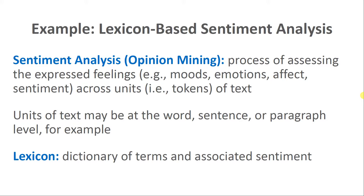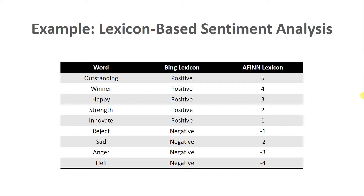When I say lexicon-based sentiment analysis, it means we're using a lexicon or dictionary of terms that have an associated sentiment with them. So for example, let's say we have the following words appearing in a discussion post: outstanding, winner, happy, strength, innovate, reject, sad, anger, and hell. We've decided to focus on the word as our unit of interest. There are different types of dictionaries or lexicons we can use. The BING and AFINN lexicons are two very common ones. The BING lexicon does a dichotomous code of certain words — whether it's positive or negative. Whereas AFINN ranges from negative five to five, where more positive values mean more positive sentiment and more negative values mean more negative sentiment.